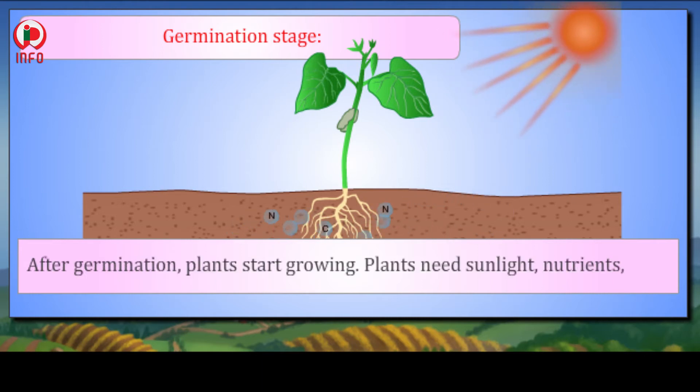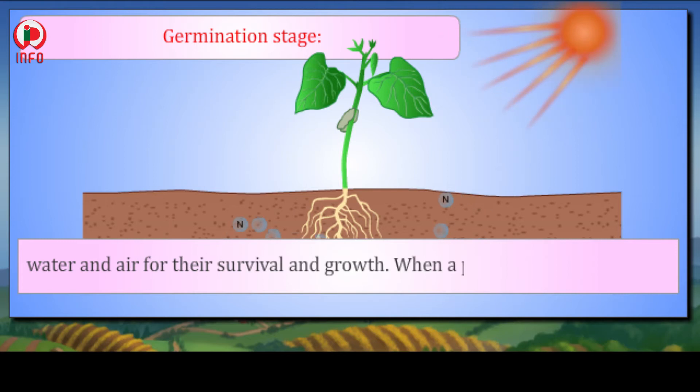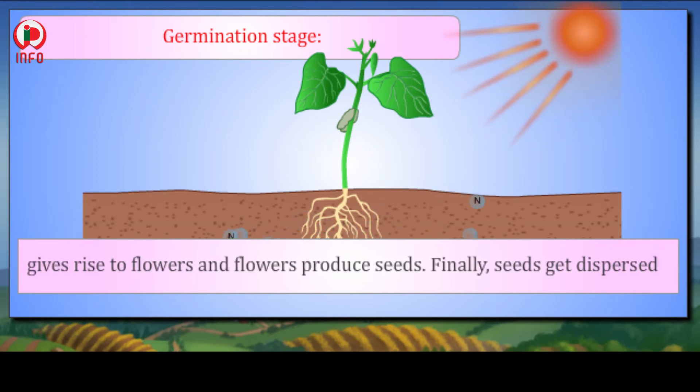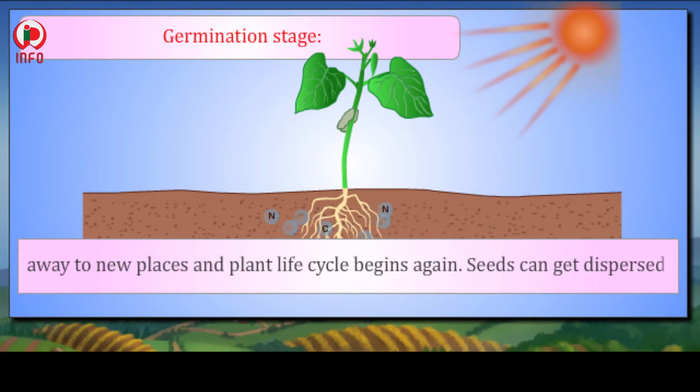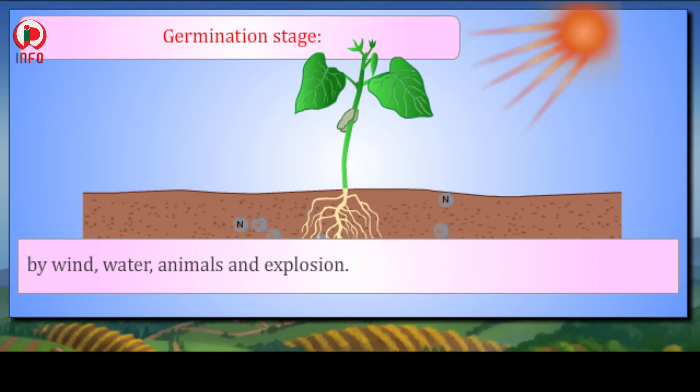After germination, the plant starts growing. Plants need sunlight, nutrients, water, and air for their survival and growth. When a plant becomes mature, it gives rise to flowers, and flowers produce seeds. Finally, seeds get dispersed away to new places and the plant life cycle begins again. Seeds can get dispersed by wind, water, animals, and explosion.